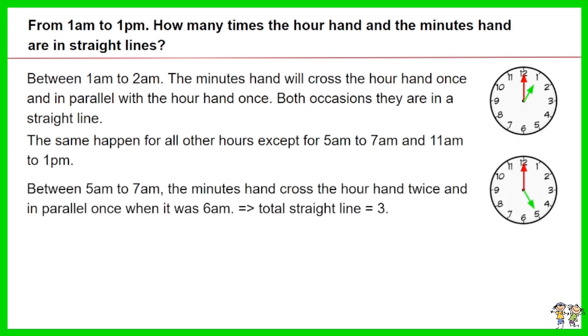Between 5am to 7am, the minutes hand crossed the hour hand twice and in parallel once, when it was 6am. Thus total straight line equals 3.